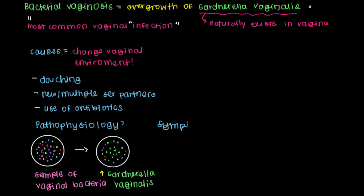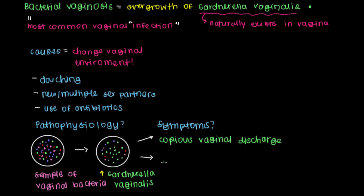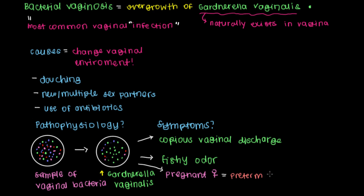What symptoms can you have with bacterial vaginosis? One of the main features associated with bacterial vaginosis, or BV, is copious vaginal discharge. This discharge also characteristically has a fishy odor to it. Perhaps one of the most dangerous effects is that pregnant women can deliver their babies early — this is referred to as preterm labor — before the baby has enough time to properly mature in the uterus.